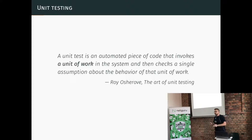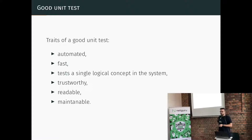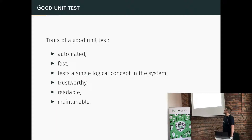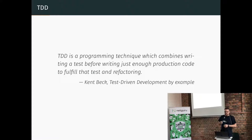A unit test is an automated piece of code that invokes a unit of work — not a class, not a method, but a unit of work — and verifies a single assumption about the behavior of that unit. A good test should be automated, run fast, and test a single concept. Most importantly, it should be trustworthy: every time it fails, you should know you've broken something in the code, not that there's a problem with the test itself.